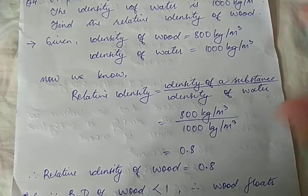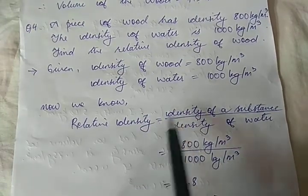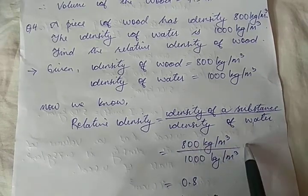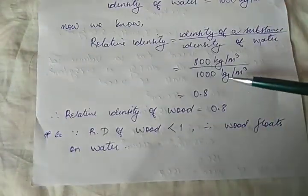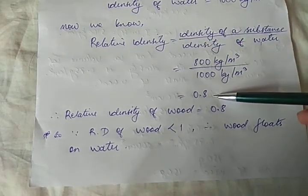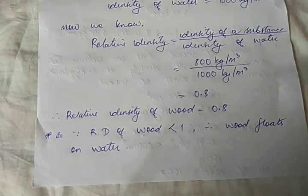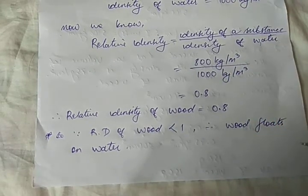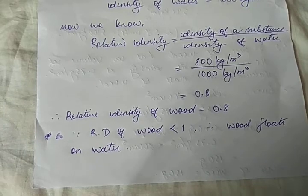Relative density of wood = density of wood ÷ density of water = 800 kg/m³ ÷ 1000 kg/m³. The kg/m³ units divide each other out, so relative density is unitless — 0.8. Relative density is always a unitless quantity, as I mentioned in the previous video.